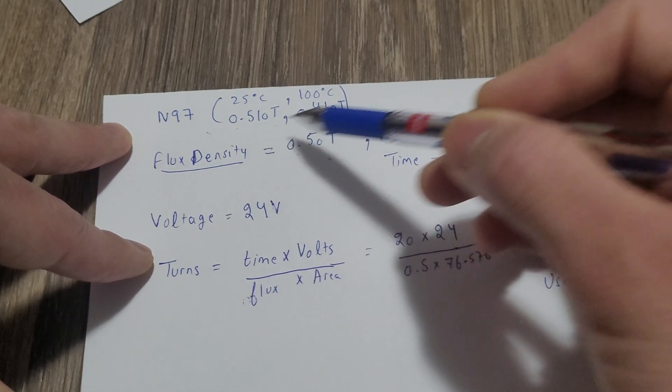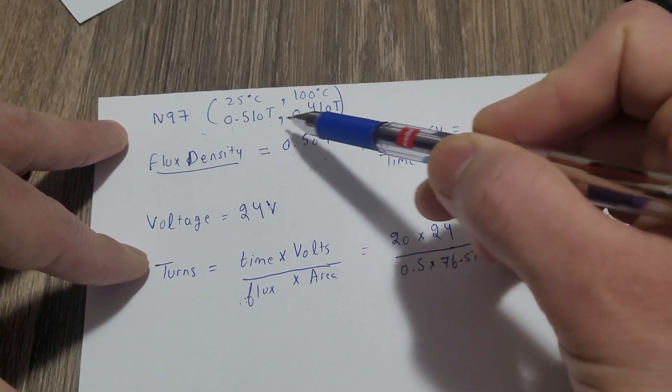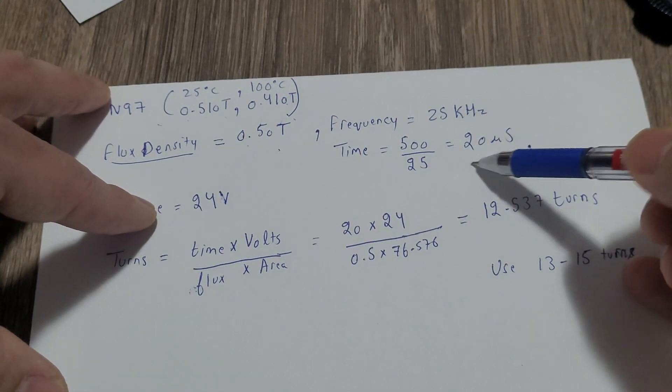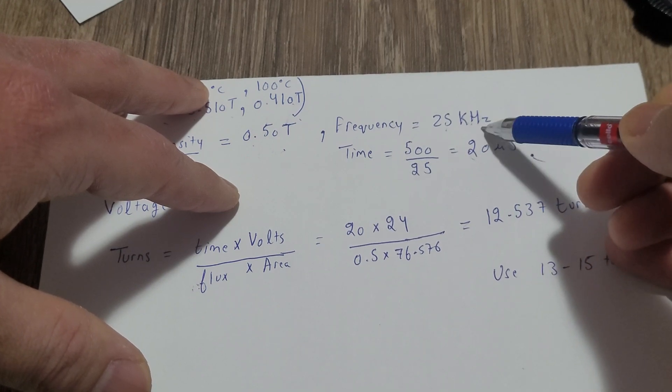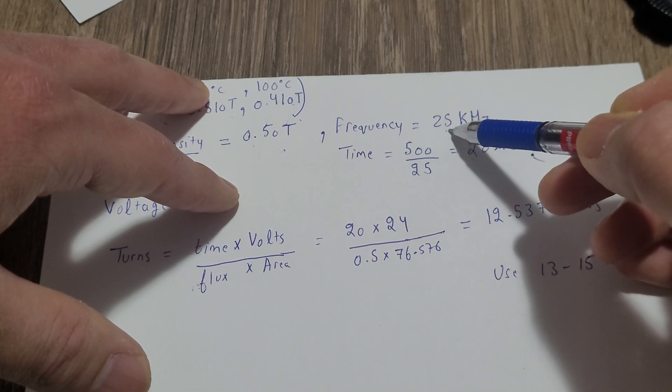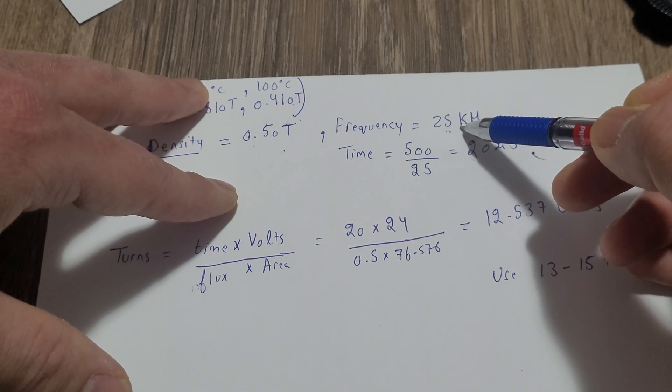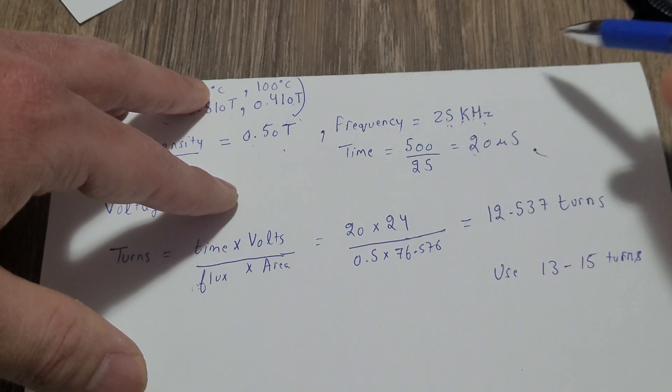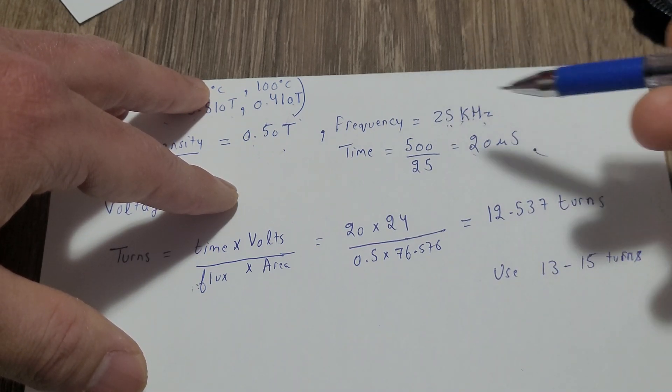And I will be using a 25 kilohertz frequency, so you have to enter the frequency that you want to use here. So for example, if your Tesla coil runs at 100 kilohertz, use that value.